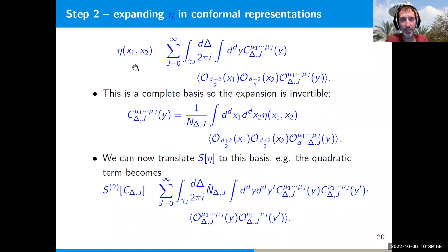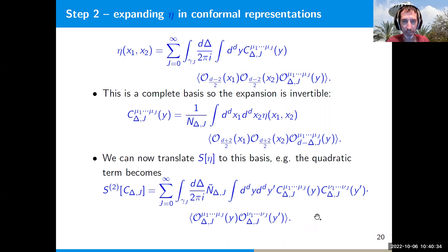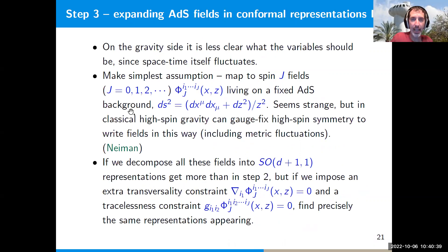The important thing is that we have this decomposition of the bi-local in terms of irreducible representations, which form a complete basis so the expansion is invertible. We can write any of the coefficients as an integral of the bi-local, where the coefficients in this inverse relation are three-point functions of the shadow representation with dimension d minus the original. Using this expansion we can rewrite our original action for η in terms of these coefficients c(Δ,j,y). The quadratic term turns out to be diagonal in Δ and j but not local in y: it's a sum over j's of an integral over Δ of the product of two coefficients times the two-point function of O_Δ.